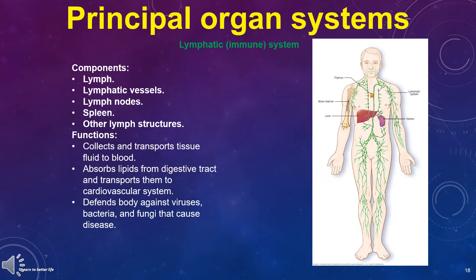The lymphatic or immune system components are lymph, lymphatic vessels, lymph nodes, spleen, and other lymph structures. Its functions are: collects and transports tissue fluid to blood; absorbs lipids from the digestive tract and transports them to the cardiovascular system; and defends the body against viruses, bacteria, and fungi that cause disease.